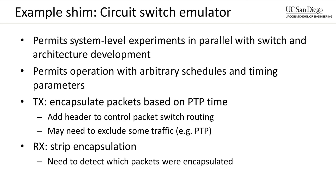Packet switches route packets based on headers, and to do this they must examine every packet as it arrives at the switch. Circuit switches, on the other hand, operate on the level of links, and they rely on packets arriving at the switch when it is in the appropriate configuration. Packets that arrive at the switch earlier or later will end up taking a different path through the switch. In this sense, circuit switches route packets based on time. The circuit emulator shim works by encapsulating packets with an additional set of headers based on the arrival time of each packet. The packet switch then routes the packet according to this new set of headers. The headers must be removed on the receive path to restore the original packet. One minor complication is the need to share the link with the packet switch with control traffic such as PTP. A simple solution is to use MAC VLAN or similar to provide a virtual interface with a different MAC address for control traffic, and then bypass the shim based on the source MAC address.